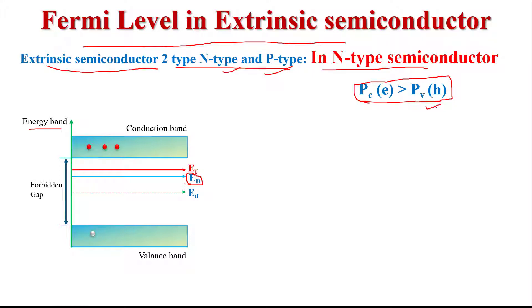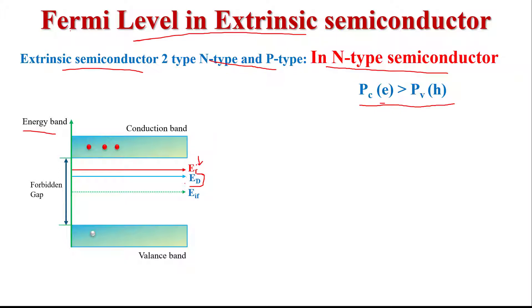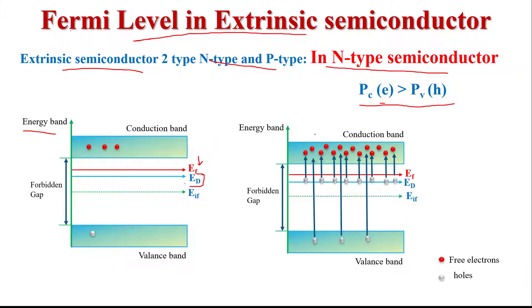Due to this relation, the Fermi level lies near the conduction band. As I have already told, N-type semiconductor is made with donor impurity, so a donor energy level exists which consists of a large number of electrons. When we give external energy from the external supply, this external energy is absorbed by the donor energy level electrons and the valence band electrons, and these electrons jump into the conduction band.